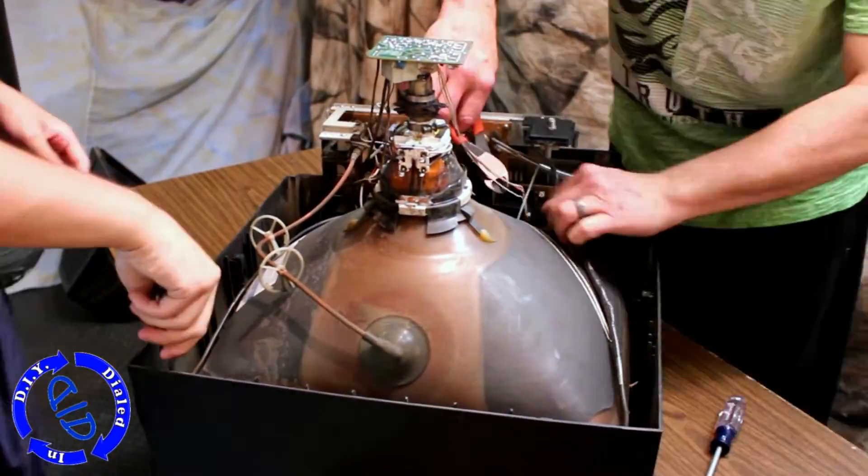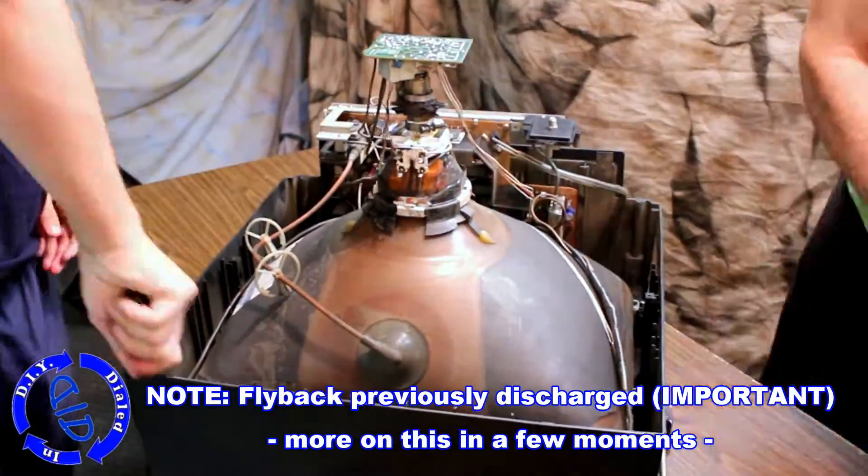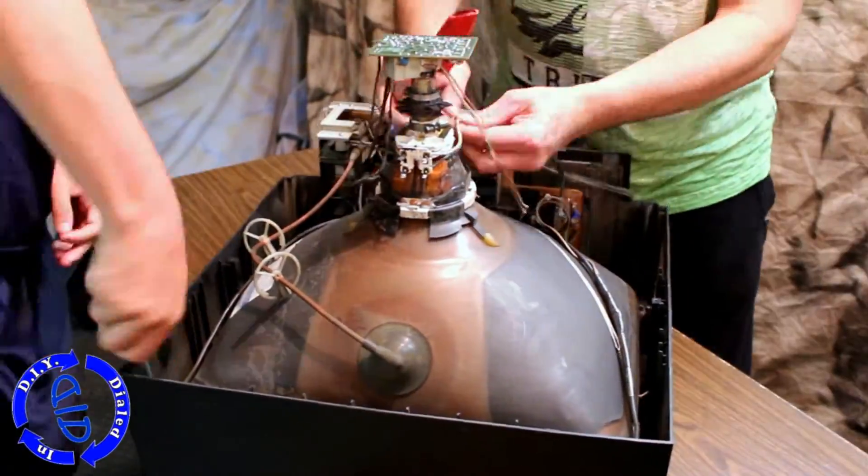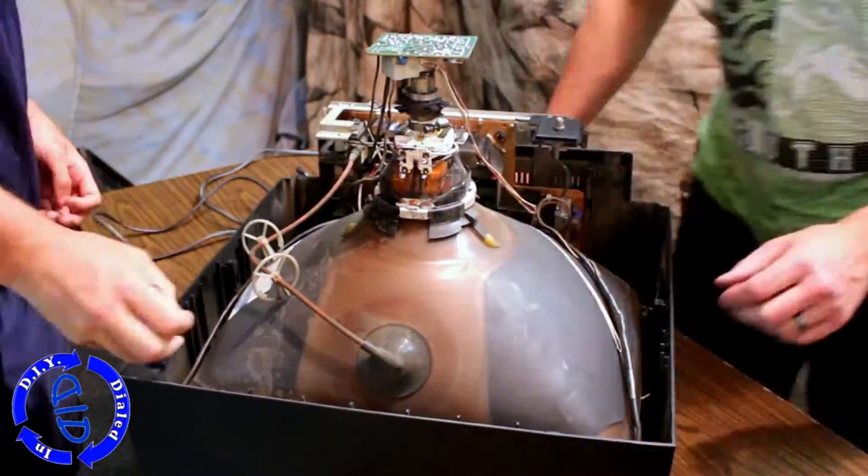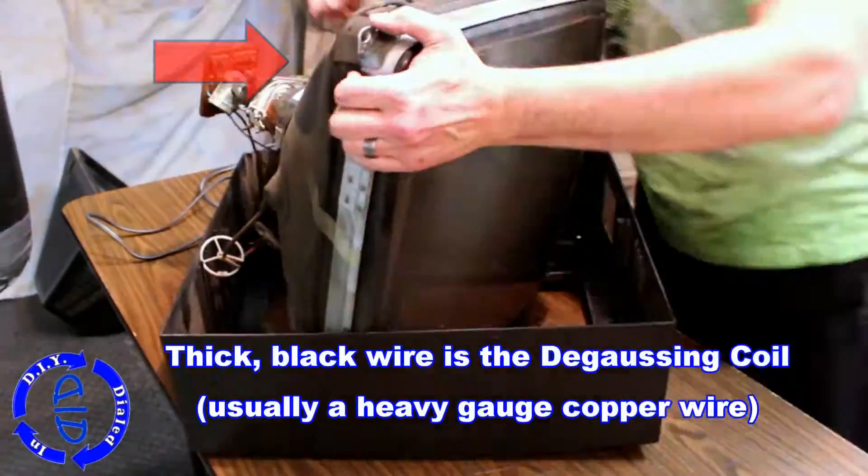In the meantime, we're going to go ahead and start disconnecting everything else that's still connecting this tube to the remainder of the cover. You can feel free to go ahead and cut away some of the wires, but the one you want to avoid cutting at all costs is the one connecting the flyback transformer because this is going to be very useful in future projects.